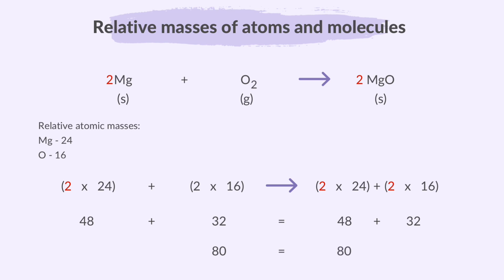For magnesium oxide, MgO, the mass of 2MgO is 2 times 24 plus 2 times 16, which equals 80. The 2 in MgO belongs to both Mg and O. Therefore, the reacting masses in this reaction equal a total mass of 80 grams, and the total mass of the product is also 80 grams.